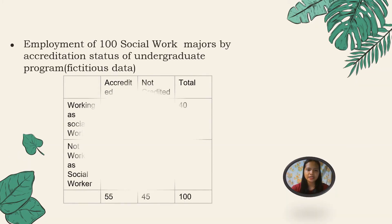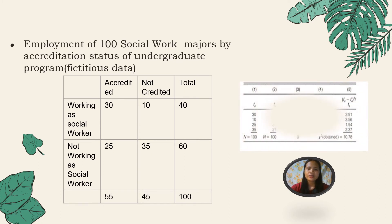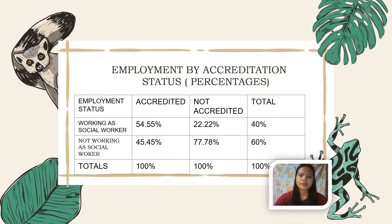Here is a fictitious dataset. The first question is: is there an association between accreditation and employment? Is there a relationship between these two variables? To compute phi, the first step is to compute the chi-square. The chi-square for this fictitious data is 10.78. The employment by accreditation status shows 40% working as a social worker and 60% not working, for a total of 100%.